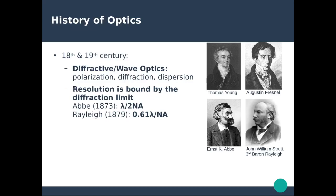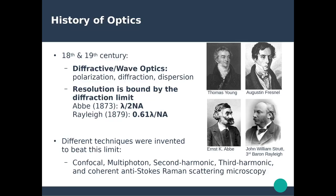An important concept introduced during this period was the diffraction limit. This states that the resolution achievable with an optical microscope is fundamentally bounded. This was derived independently by Ernst Abbe in 1873 and Lord Rayleigh in 1879, yielding similar results: the best resolution — the smallest object imageable with light — is approximately lambda over 2, half the wavelength of the optical excitation. Many techniques have since been developed to try to beat this diffraction limit, including confocal microscopy, which we will cover in Chapter 3.